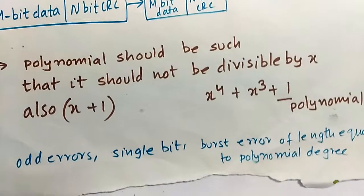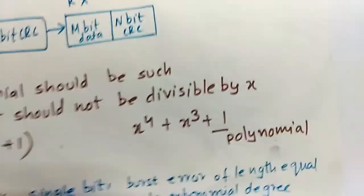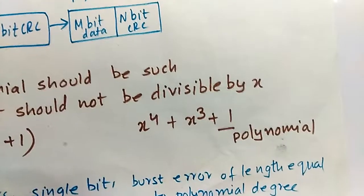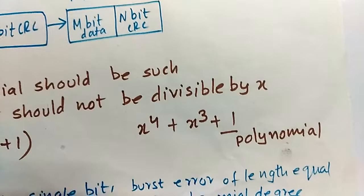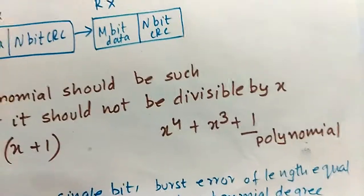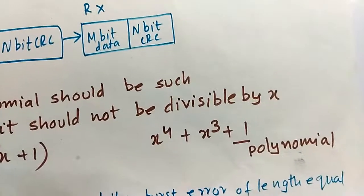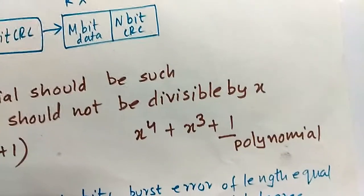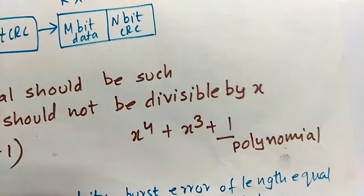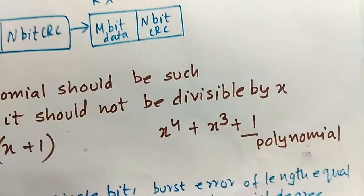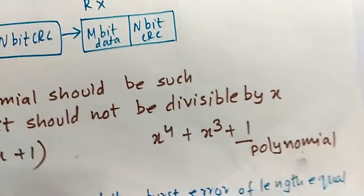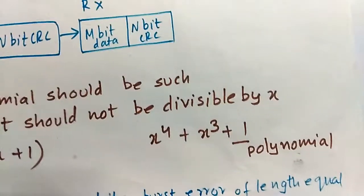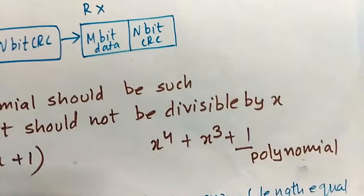The CRC polynomial has certain rules: the polynomial should not be divisible by x or by x+1. For example, consider the polynomial x^4 + x^3 + 1 — this polynomial is not divisible by x or x+1, so it satisfies the CRC polynomial requirements.